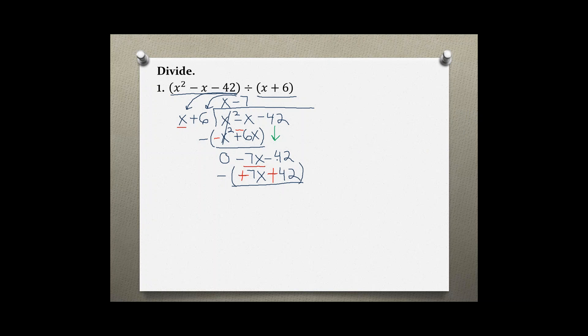I'm ready to add these two terms down. Negative 7x plus 7x is 0, and negative 42 plus 42 is also 0. So my remainder would be 0, which means that the answer to my division problem is x minus 7.